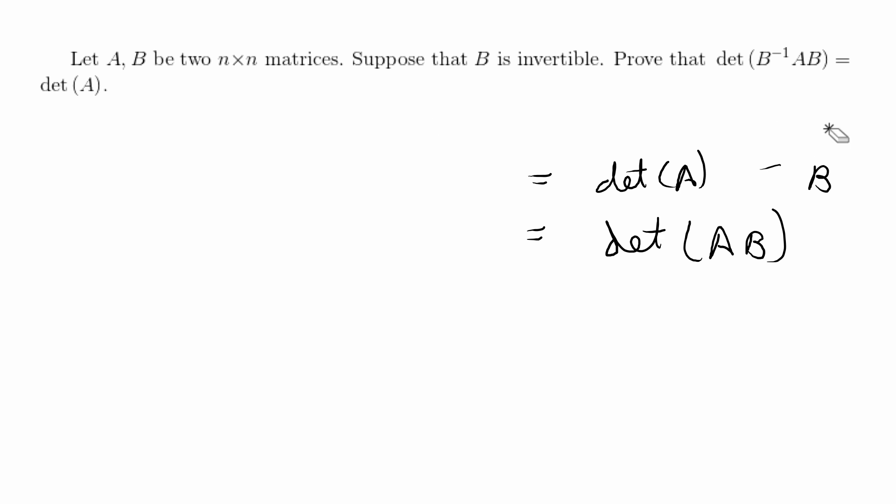Alright, so with those properties we can now go ahead and solve this proof pretty simply. So proof, let's take the left hand side that we're given and try to change it into the right hand side to be equal to the determinant of A.